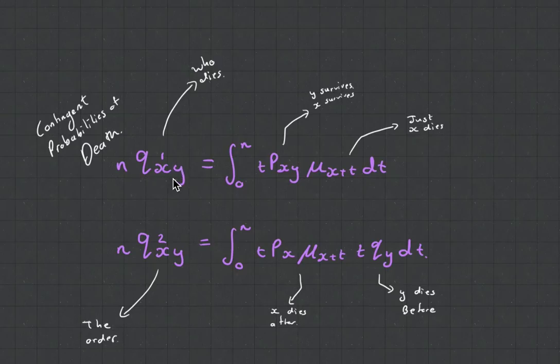So in this one, what we're saying is that life X has to die. Well, when we say has to die, the probability is that they die, and that they die first. And this one is that they die second.